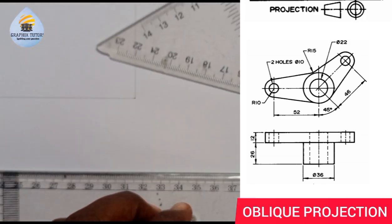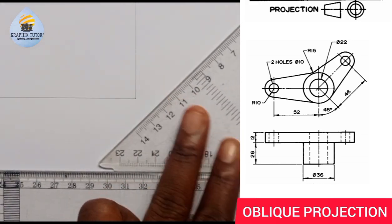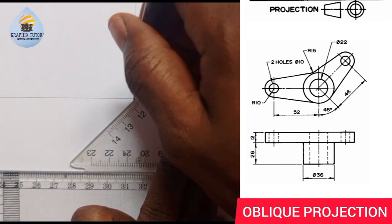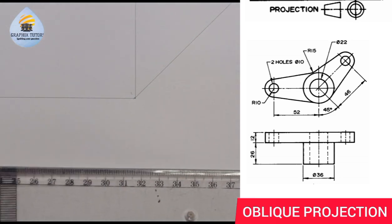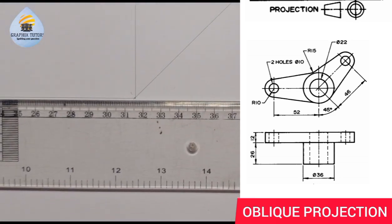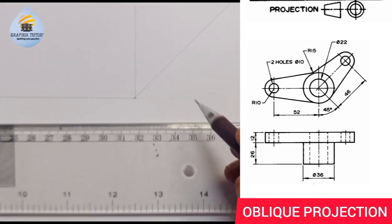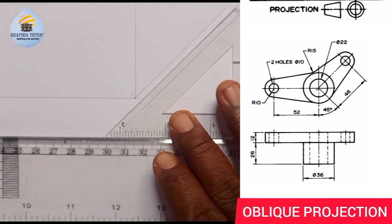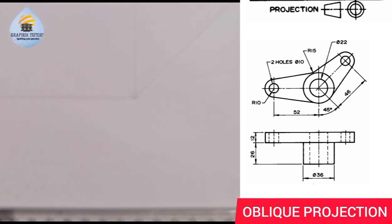You draw your z-axis at an angle of 45 degrees. This angle is inclined to the horizontal at 45 degrees, and when I mean 45 degrees I mean using your 45-degree set square to do the needful. I will do it now, and then we proceed moving forward.